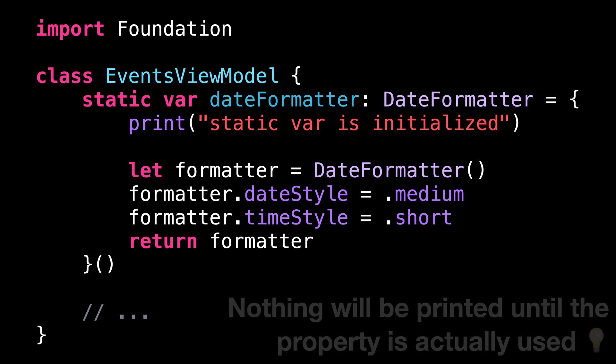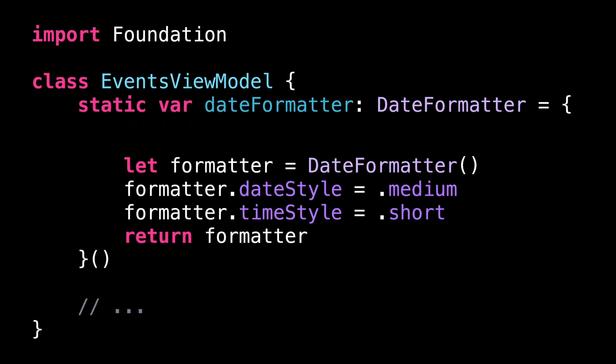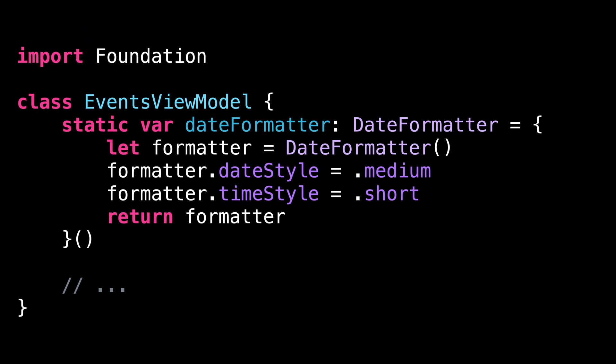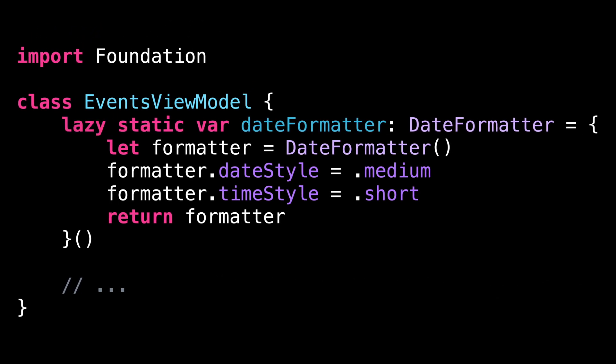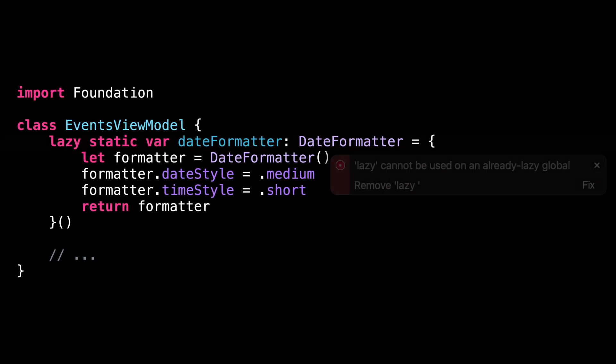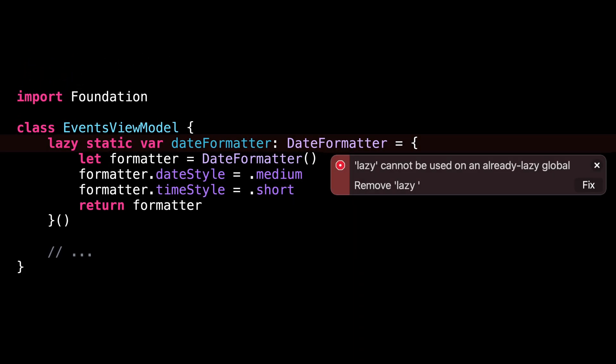Another way to highlight this hidden feature is to explicitly declare the static property as lazy. You'll then get an error message informing you that the static property is already lazy.